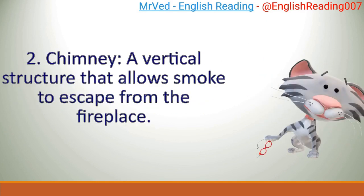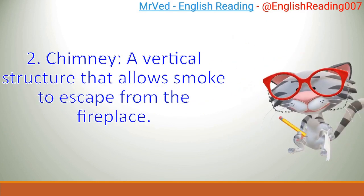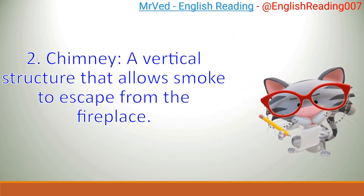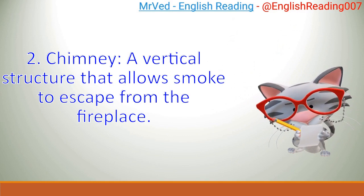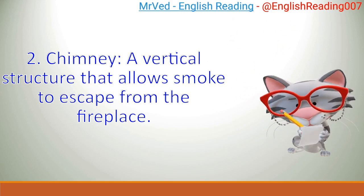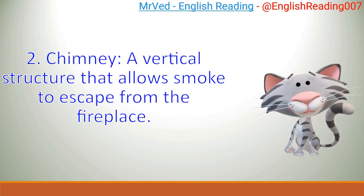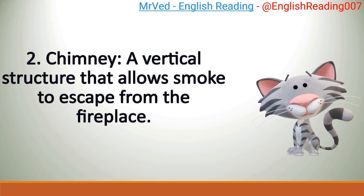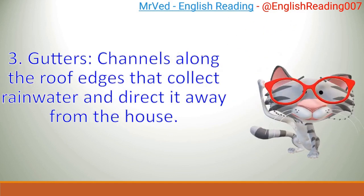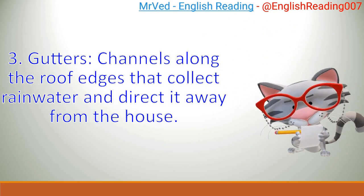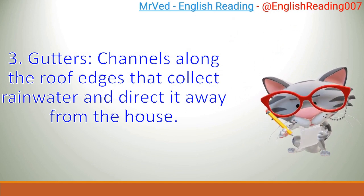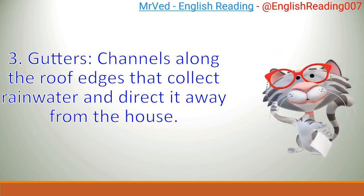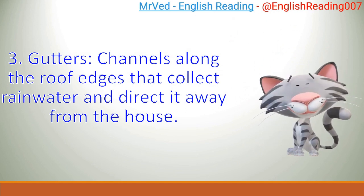2. Chimney: a vertical structure that allows smoke to escape from the fireplace. 3. Gutters: channels along the roof edges that collect rainwater and direct it away from the house.